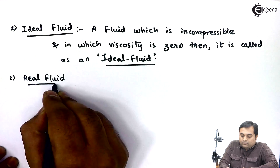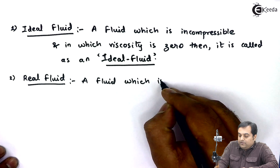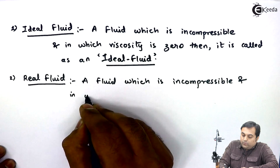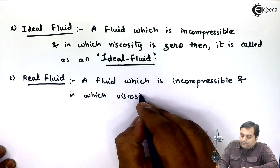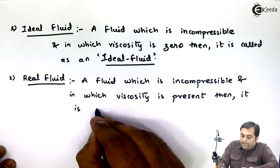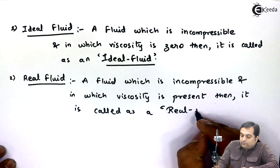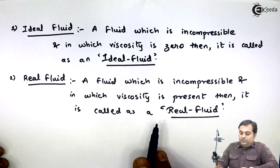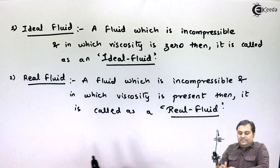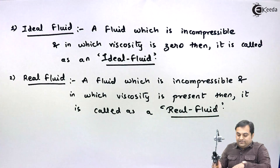Next, real fluid. A fluid which is incompressible and in which viscosity is present is called a real fluid. Fluids which have viscosity are called real fluids. In the universe, we mostly come across real fluids — ideal fluids are imaginary, while real fluids actually exist.